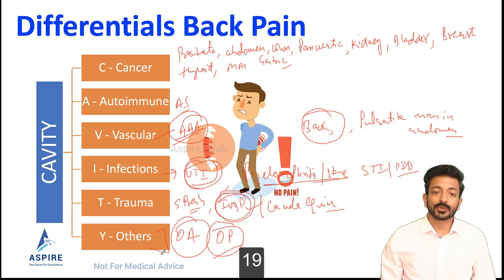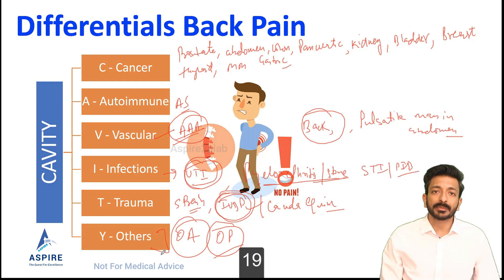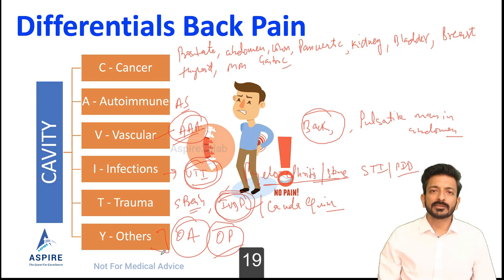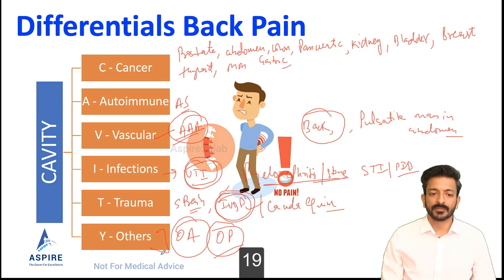When approaching a back pain station, consider the age of the patient — cancer is more likely in older patients. For aortic aneurysm, ask about a history of high blood pressure. For autoimmune causes, ask about other autoimmune diseases. For infections, ask about fever and flu-like symptoms. For UTI, ask about nausea, vomiting, and changes in urine color or smell. For trauma, ask about the patient's occupation and any recent injury.